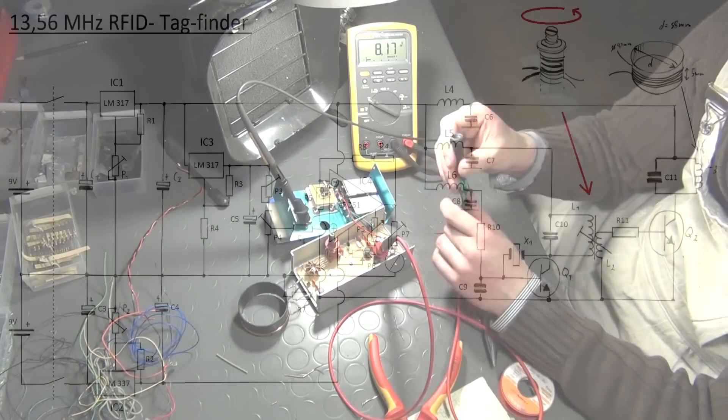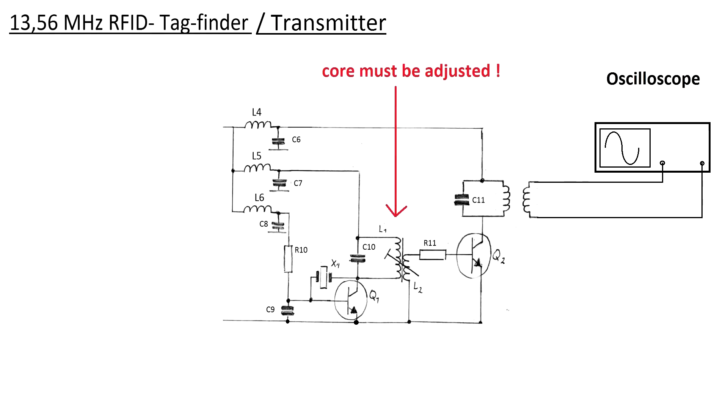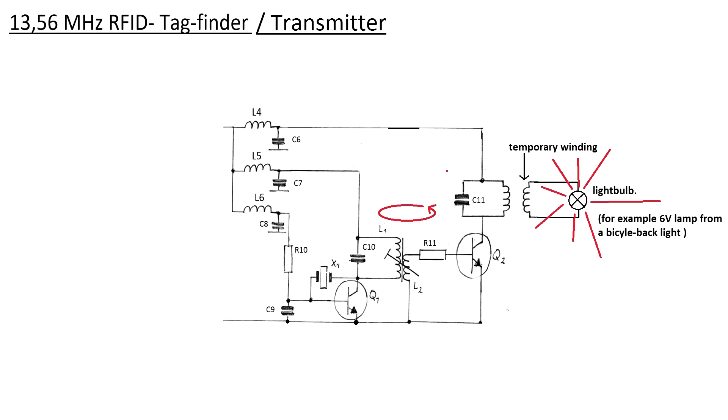Next, if it wasn't done already, the core of the RF transformer must be adjusted so that the oscillator and RF amplifier are working properly. For that, a temporary winding is wound around the detector coil which is then attached to an oscilloscope or a light bulb. But how this is done was already explained in part 2 of the series.